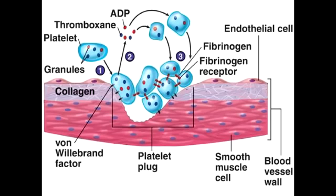What is the first step in platelet plug formation? The first step is the injury step. In the injury step, the endothelium is damaged — there is a cut on the endothelium which exposes its collagen. When that collagen is exposed, von Willebrand factor will bind to the exposed collagen.